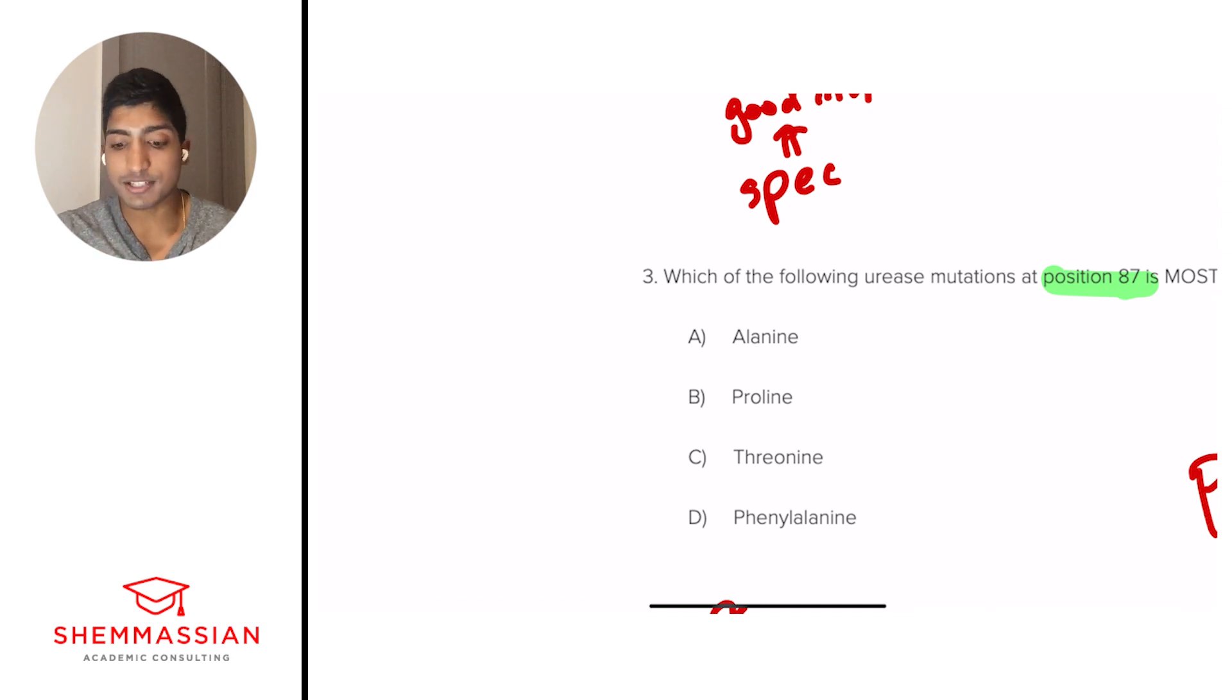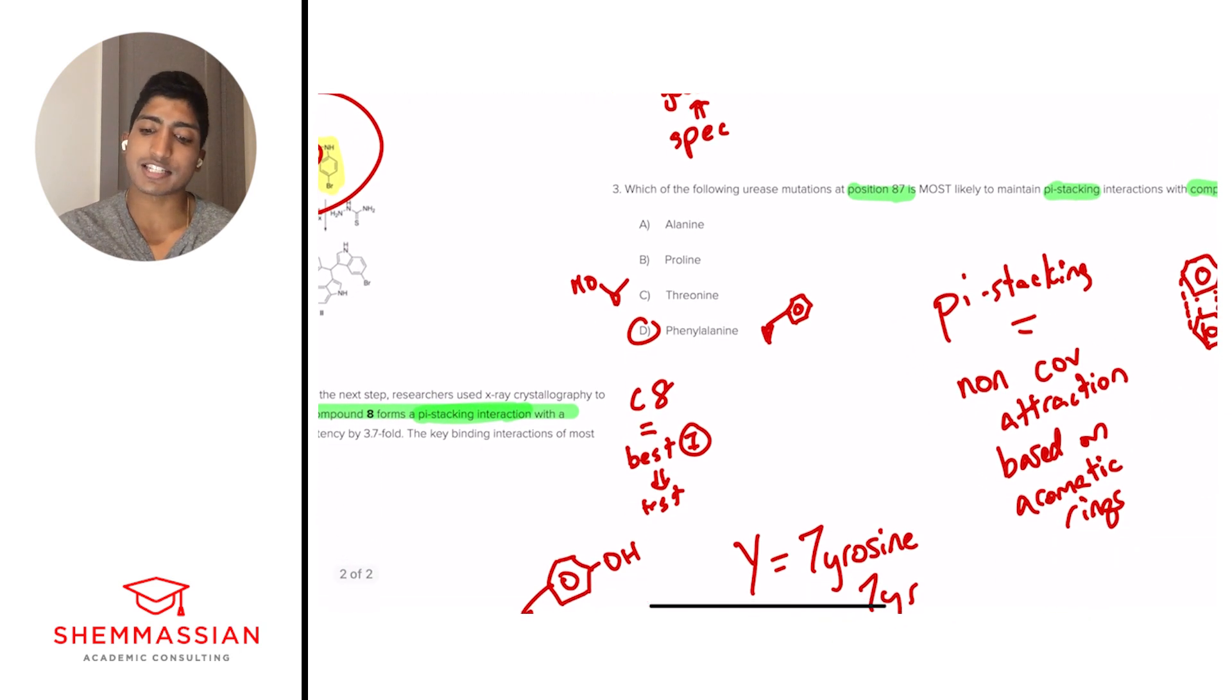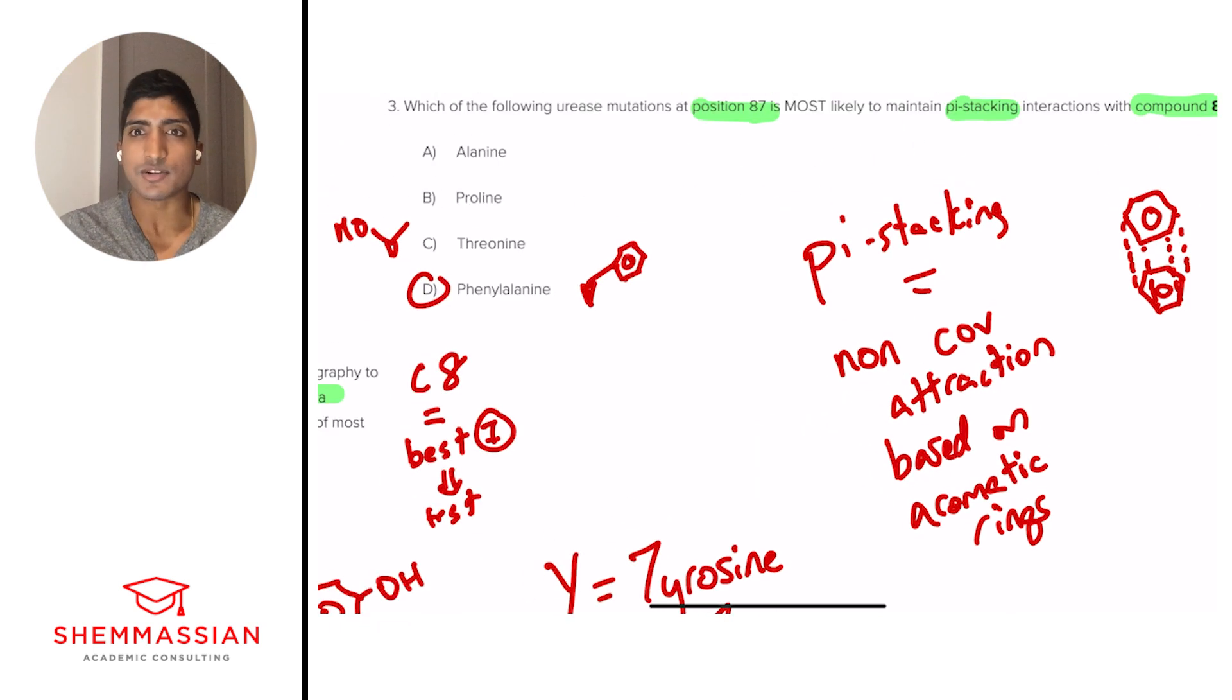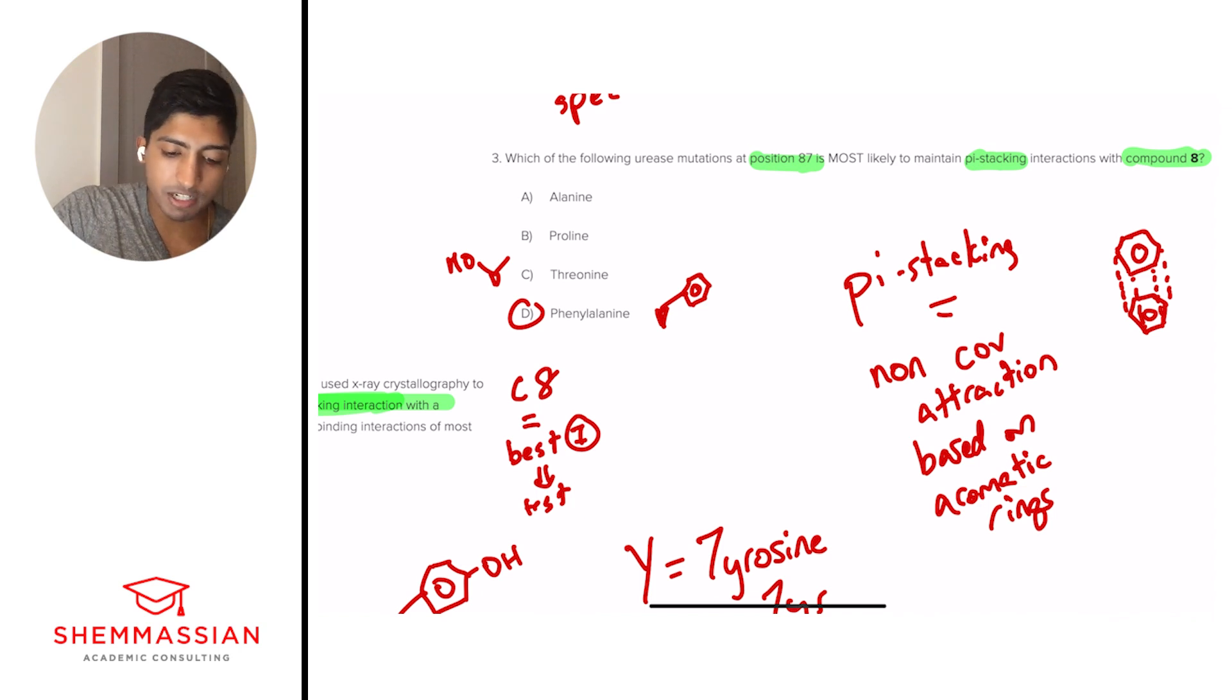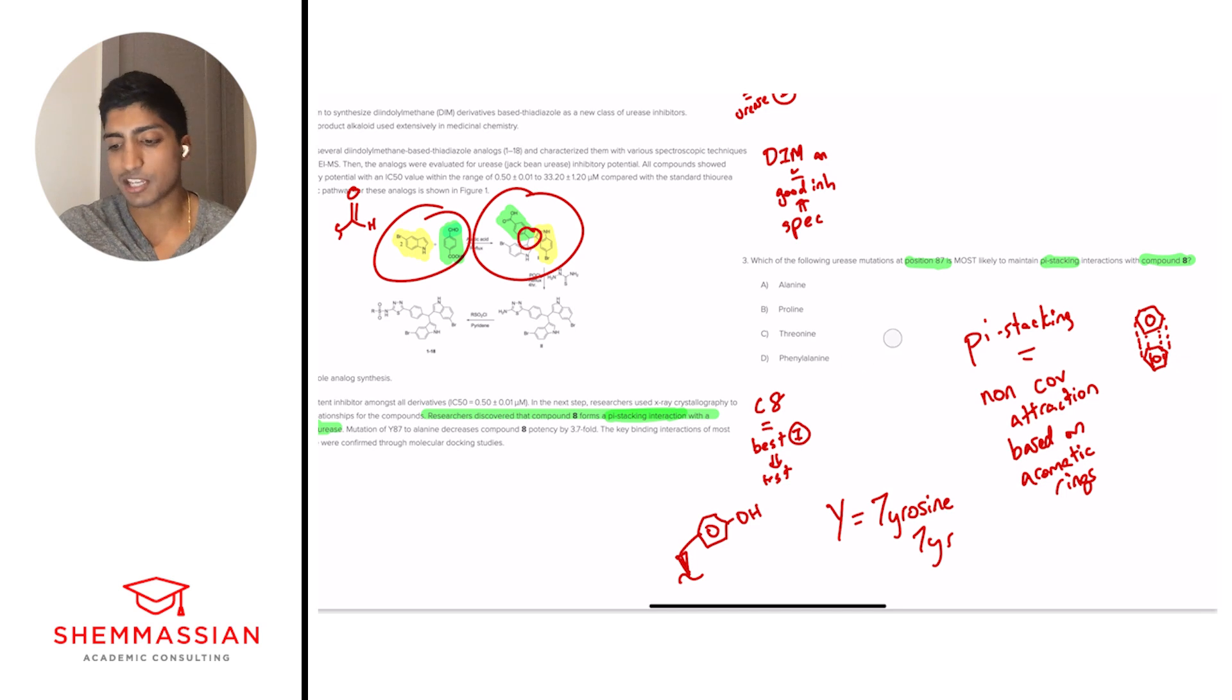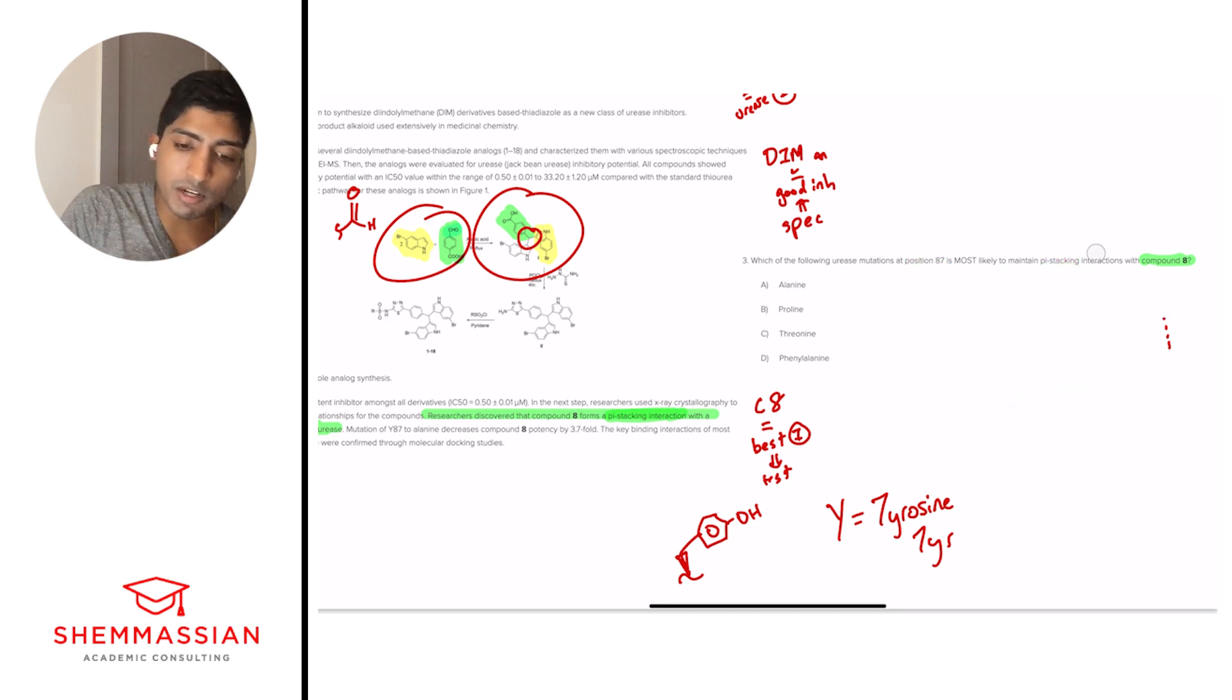This requires us to know our side groups for each of these answer choices. So alanine has this carbon side group. Proline is a ring, which has its own sort of special side group. Threonine has this sort of branch side group with a carbon and an OH group. And then phenylalanine is our aromatic one. So this is our answer. Phenylalanine simply goes like this, an ENT with an aromatic ring. And so we pick D because we're looking for an amino acid that can have this pi-stacking group, which is only related to amino acids which have aromatic rings. And phenylalanine is our amino acid with aromatic rings. So right away with that, we're three for three. That was a challenging question that required us to know what pi-stacking meant, as well as what amino acids have different side groups and what they look like.